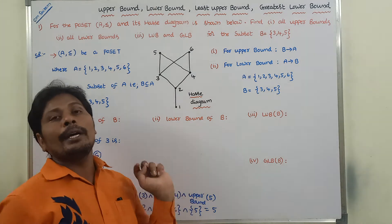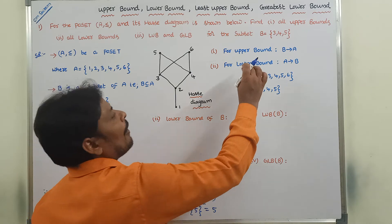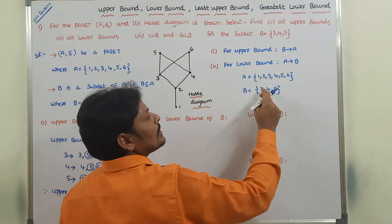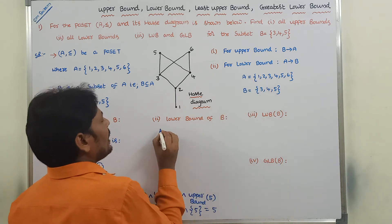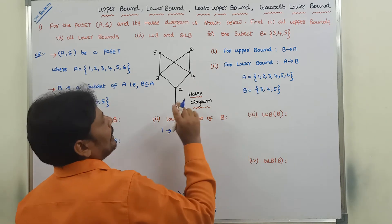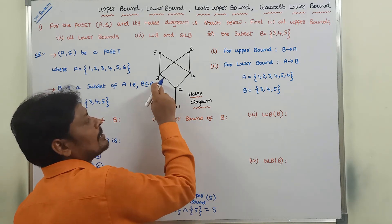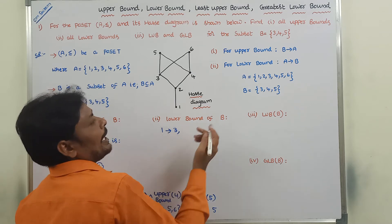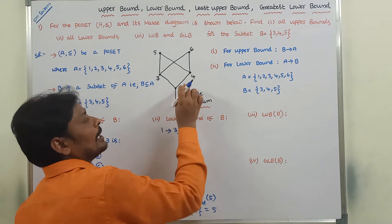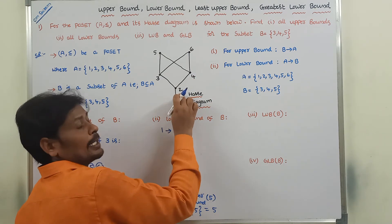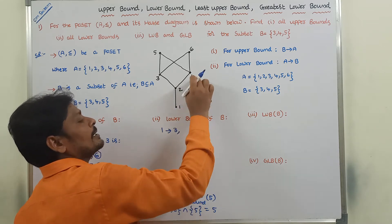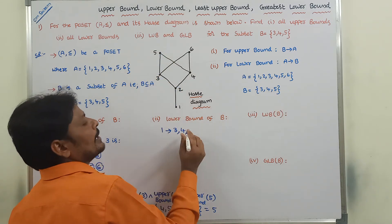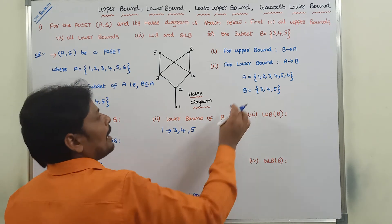For lower bound of B, we consider for every element of set A which elements of set B it is related to. Taking element 1: 1 is related with 3 (by transitivity via 2), 1 is related with 4 (by transitivity via 2), and 1 is related with 5. So element 1 is related with all elements of set B: {3, 4, 5}.